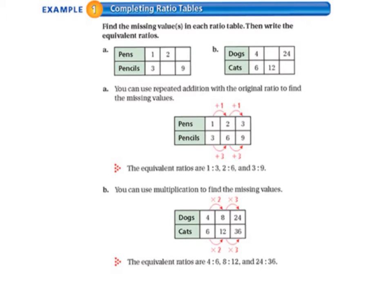In letter A we have pens and pencils. We have one pen for every three pencils, so our relationship is 1 to 3. We'll be taking the top number, the pens, and multiplying by 3 to get the bottom number, the pencils. So 1 times 3 is 3, 2 times 3 is 6, and then to get from 9 up to the top number we go backwards using inverse operations — we divide by 3, so 9 divided by 3 is 3.